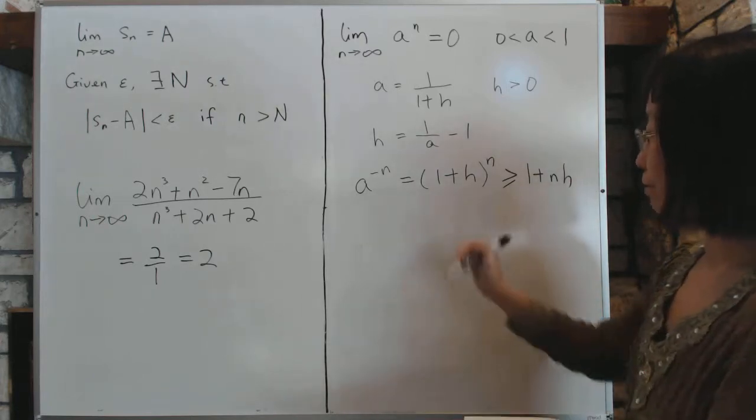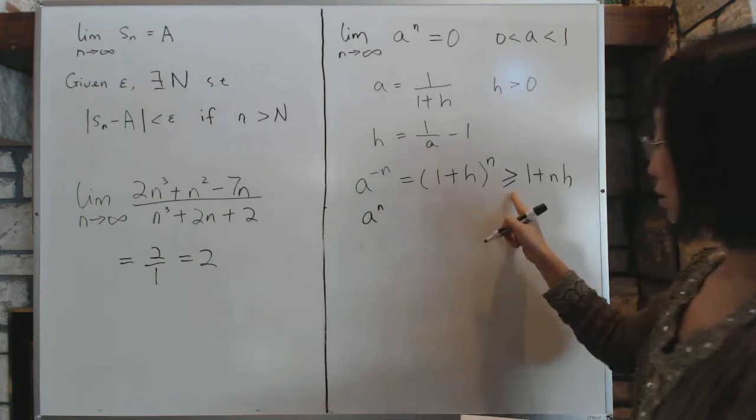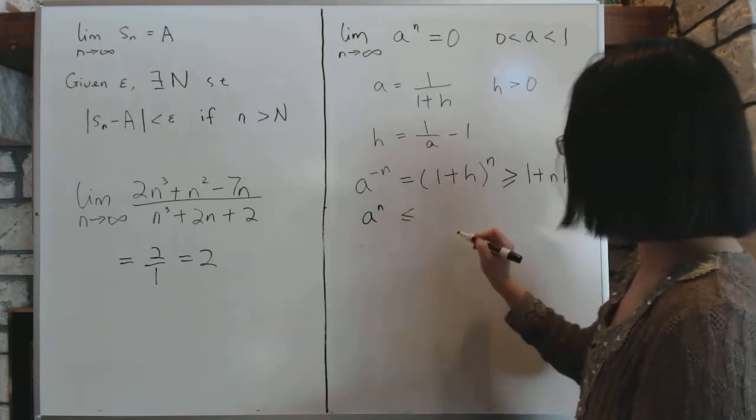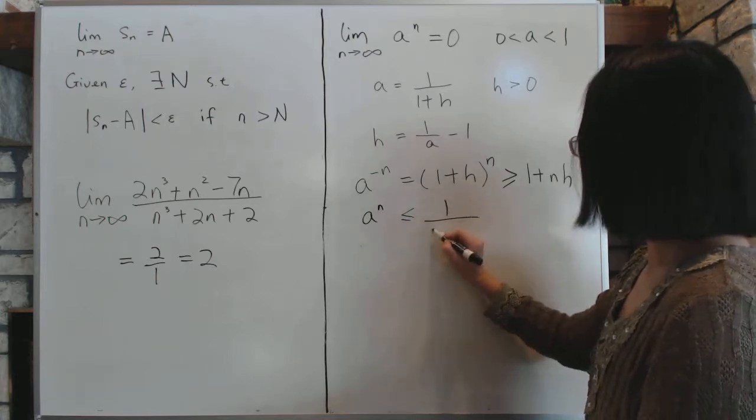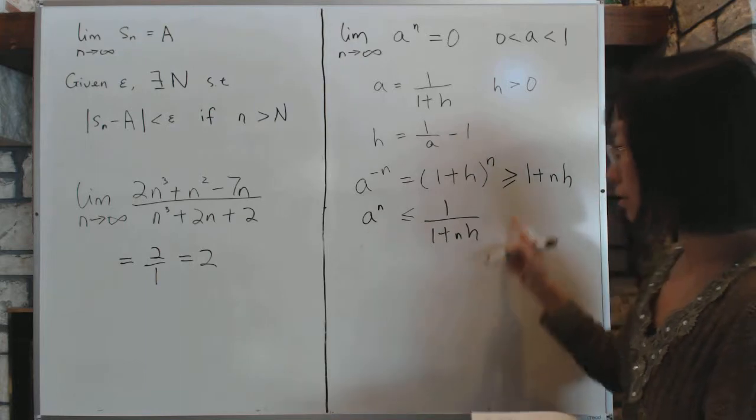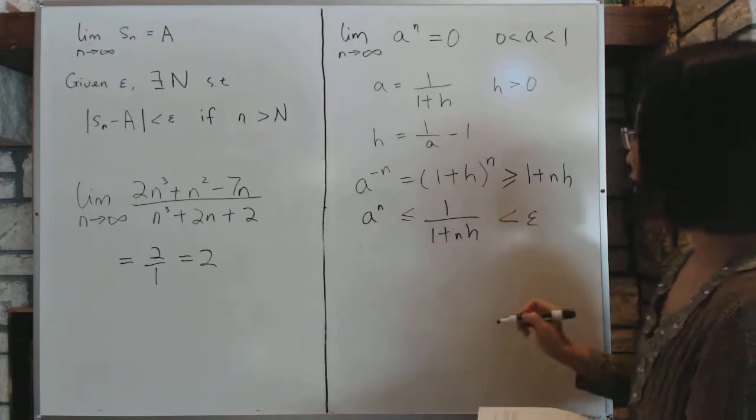So if this is true, then things are looking pretty good, because then we say a to the power n, when we flip the fraction over, the inequality sign changes, is 1 over 1 plus nh. And we need this thing to be less than epsilon. So we'll set this thing to be less than epsilon, which means,